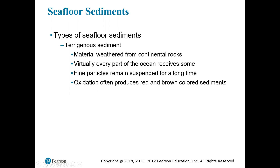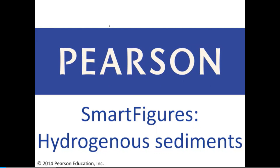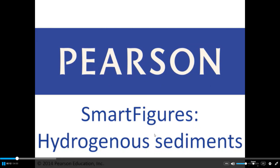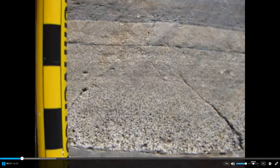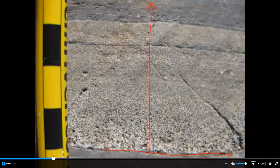We'll watch a smart figure video on the three sediment types. Terrigenous sediment — generated by the land — consists of particles from the weathering of pre-existing rocks, generally weathered off the land. Here you can see a beautiful graded bed starting with coarse sand at the bottom, getting finer upward. These particles come from the weathering of pre-existing rocks on land.